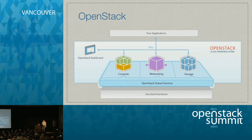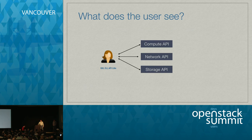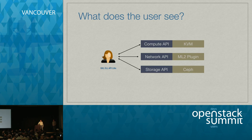We're obligated to show this type of slide just to level set everyone on what OpenStack is. This is a high-level overview with compute, networking, storage, all the shared services underneath, and the dashboard. We're obviously going to talk about the networking component today. The user is going to see the APIs — tenants see APIs they can use to interact with the system, whether it's compute, network, or storage. Those could be backed by KVM, ML2 plugin, or Ceph on the storage side, but the user sees the abstractions through the APIs.